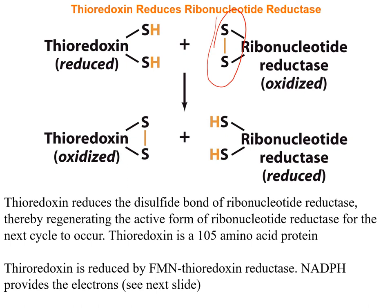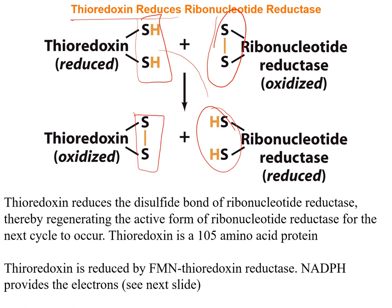The thiols from ribonucleotide reductase donate their electrons during the mechanism and become oxidized. We therefore need to regenerate those thiol (SH) groups so they can participate in subsequent catalytic cycles. Ribonucleotide reductase works in concert with thioredoxin: thioredoxin donates its reducing equivalents via its own cysteine SH groups, becomes oxidized itself, and in doing so reduces ribonucleotide reductase so the mechanism can continue.